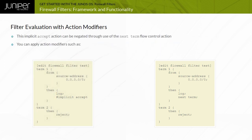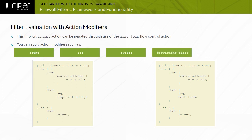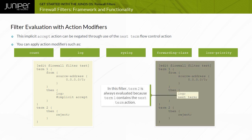If you want to apply an action modifier such as count, log, syslog, forwarding class, or loss priority to a packet, and then continue to evaluate terms to decide whether to accept, discard, or reject, you need to use the next term flow control action. In this filter, term 2 is always evaluated because term 1 contains the next term action.